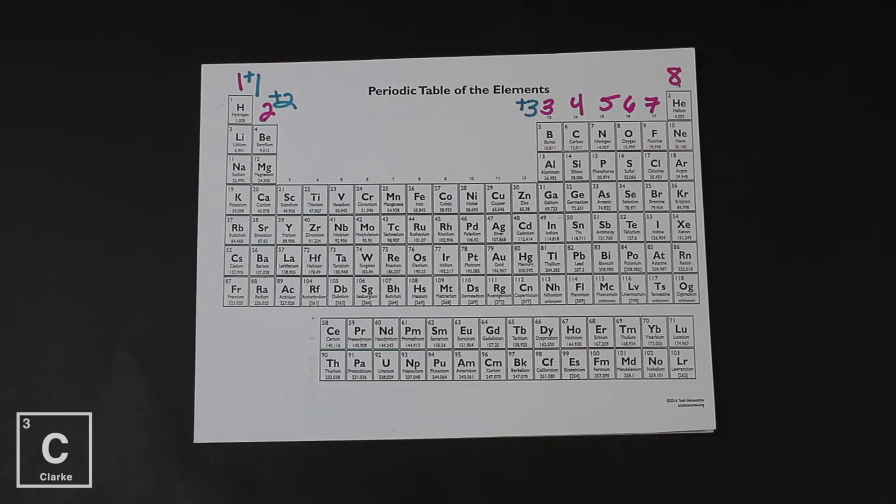Remember the valence electron trend? We skip the transition metals — those short groups — and only label the tall groups, the main groups. It's the same thing with oxidation numbers. So let's skip over to group 13, which has three valence electrons. It could lose three or gain five, but losing three is going to take less energy. Let's label that with a plus three — everything in group 13 will be a plus three cation.